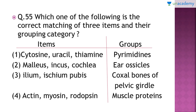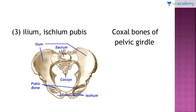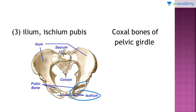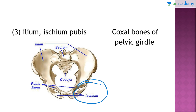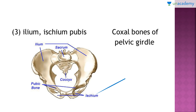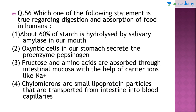Question number 55: Which one of the following is the correct matching of three items and their grouping category? The right answer is option number three — ilium, ischium, and pubis are the coxal bones of the pelvic girdle. In the diagram you can see the sacrum, ilium, pubic bone, coccyx, and ischium. At birth these three bones are separate, but as the infant grows they get fused.